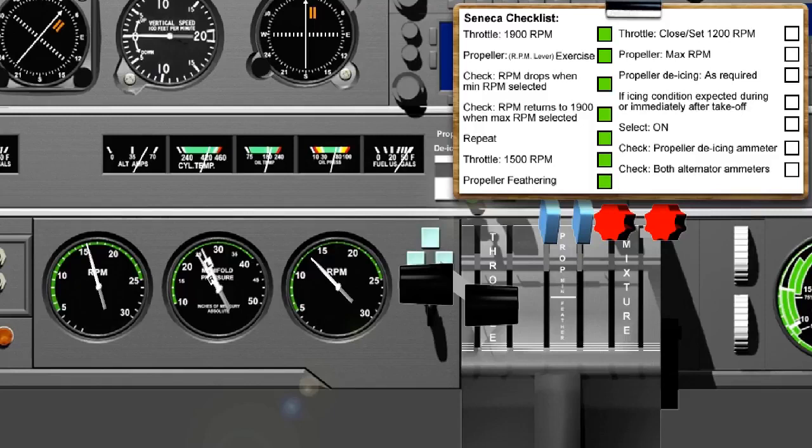Propeller feathering check. Moving the propeller control lever below the white line will cause the propeller blades to move towards the feathered position and the RPM to decrease. If, as is the case with the propeller we are considering, a centrifugal latch mechanism is fitted, it's important that the RPM should not drop below 1000, because the centrifugal latches will not become engaged and the propeller will feather, which is not what we're trying to achieve in this check.